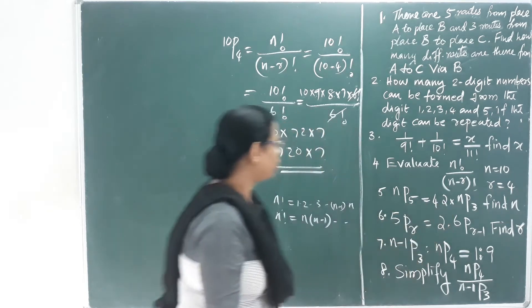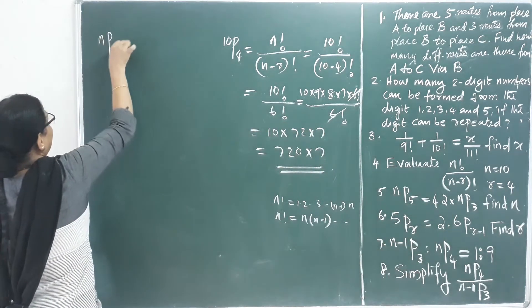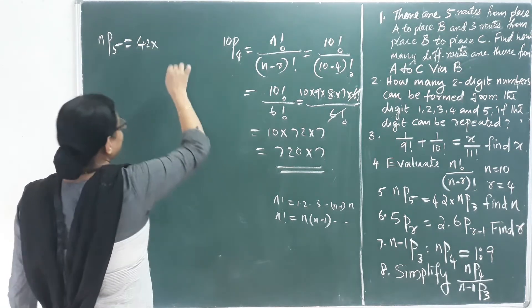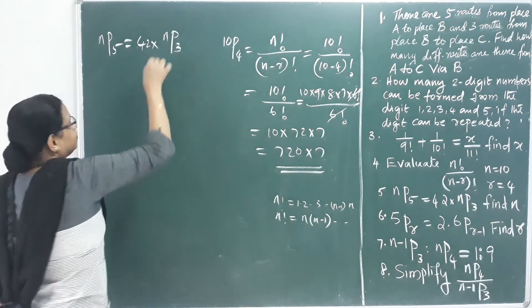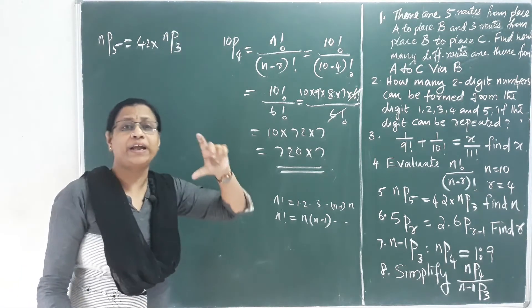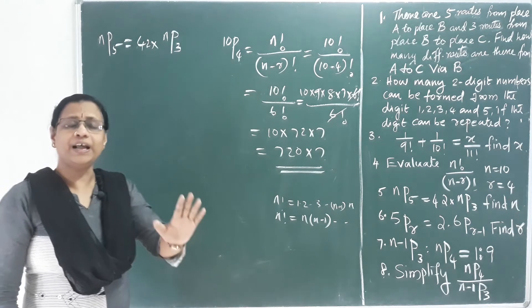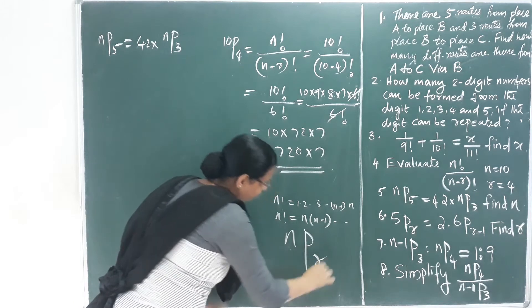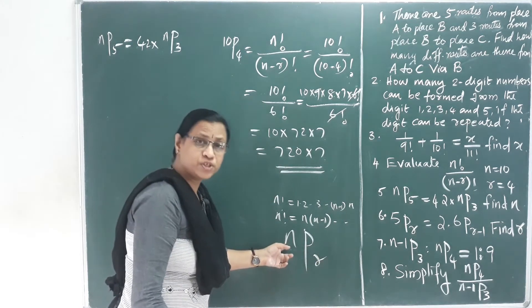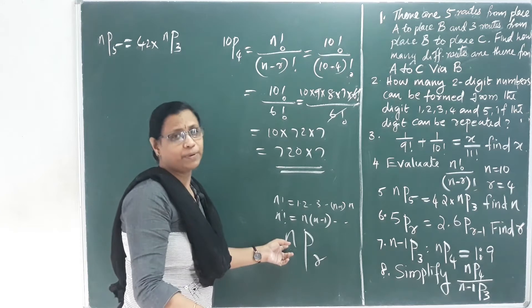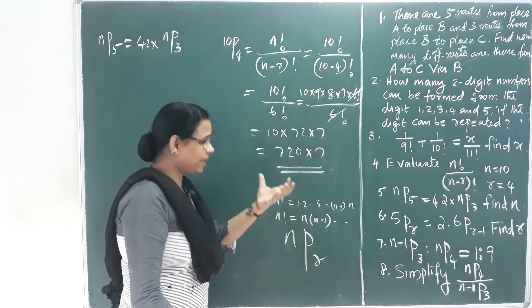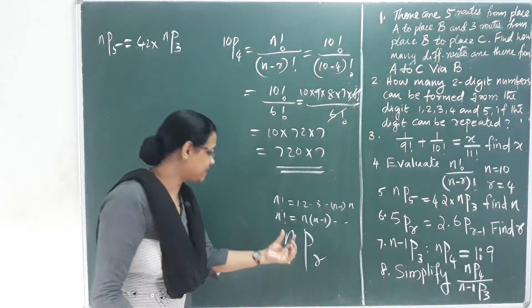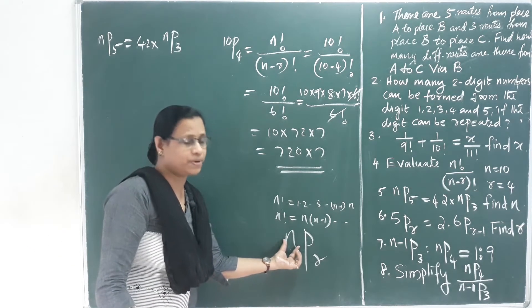NP5 is equal to 42 into NP3. We need to find the value of N. The value of N in NPR must be a natural number — a counting number — and N must be greater than R.